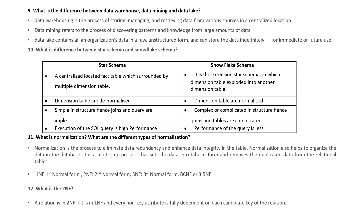What is the difference between star schema and snowflake schema? The star schema has a centralized fact table surrounded by multiple dimension tables. The snowflake schema is an extension of the star schema in which dimension tables are further normalized into additional dimension tables. In star schema, dimension tables are denormalized, whereas in snowflake schema, dimension tables are normalized — meaning no duplicate records but a more complex structure. Due to this complexity, joins and queries are more complicated in snowflake schema, whereas in star schema the simple structure means joins and queries are simpler and query performance is higher.